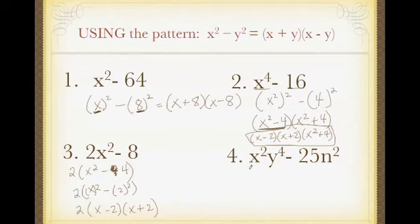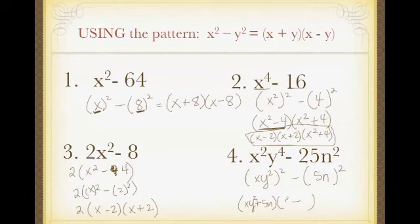For this one, I'll write it as my difference of squares, so this gives me xy squared minus 5n. So then I write parentheses. I know 1 is plus, 1 is minus, and I take my square roots and fill it in my pattern. And I'm done.